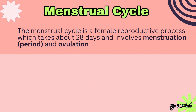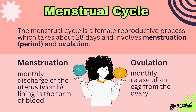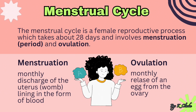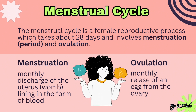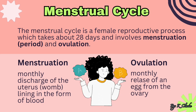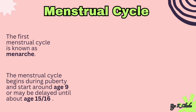The menstrual cycle is a female reproductive process which takes about 28 days and involves menstruation, also known as the period, and ovulation. Menstruation is the monthly discharge of the uterus lining in the form of blood, while ovulation is the monthly release of an egg from the ovary. The first menstrual cycle is known as menarche, and this occurs during puberty.